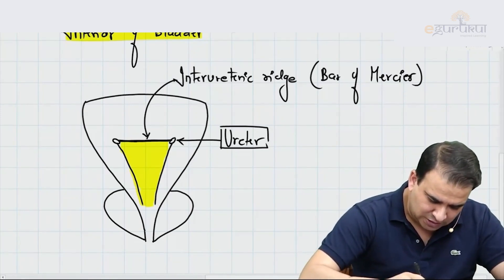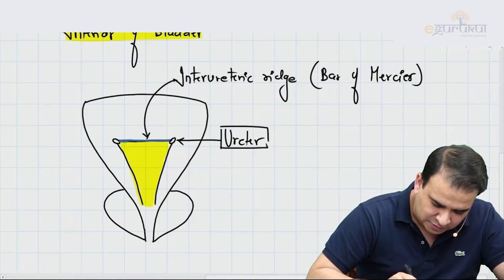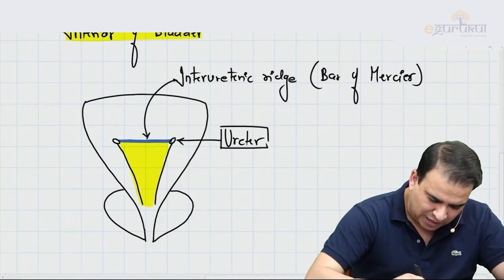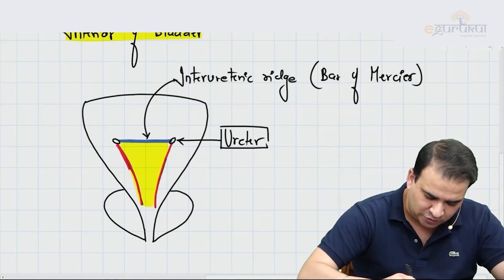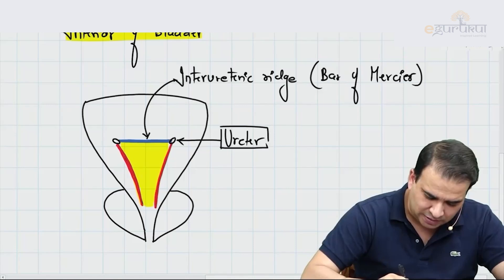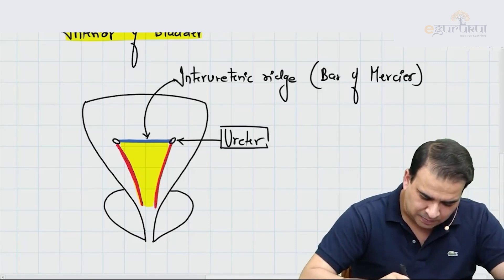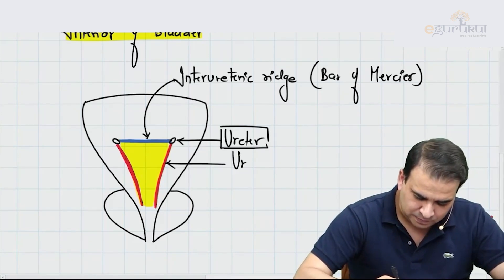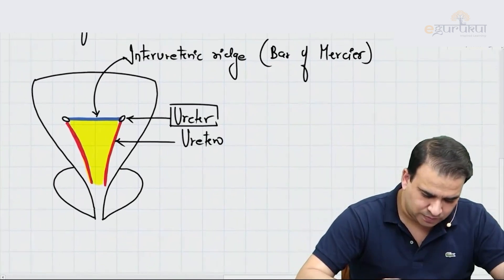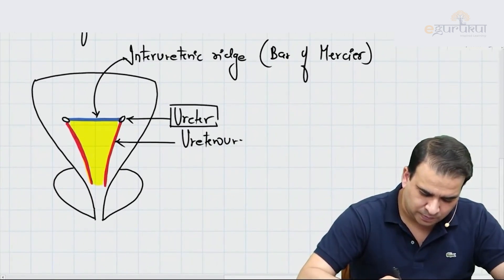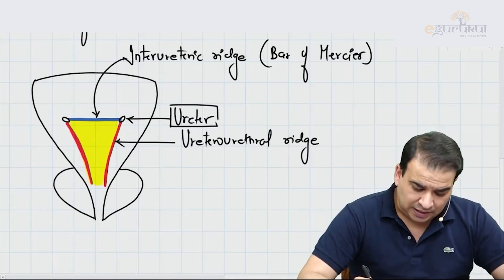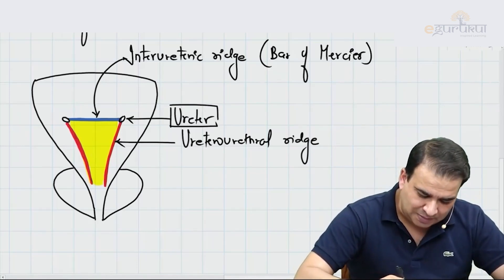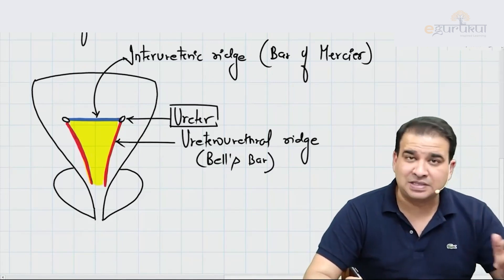Similarly, there is a ridge extending from the ureter to the urethra — that is called the uretero-urethral ridge. It is not as prominent as the interureteric ridge, but it is there. This uretero-urethral ridge is also called Bell's Bar. So the interureteric elevation is the Bar of Mercier, and this one is called Bell's Bar.